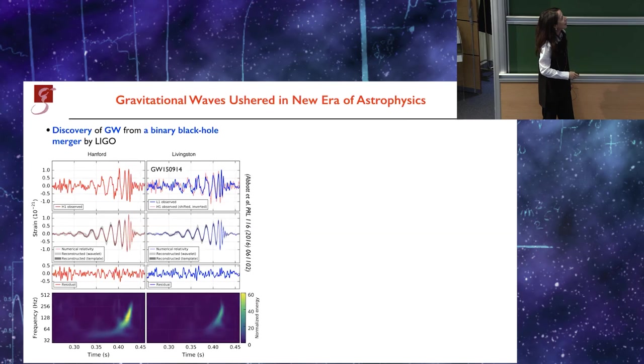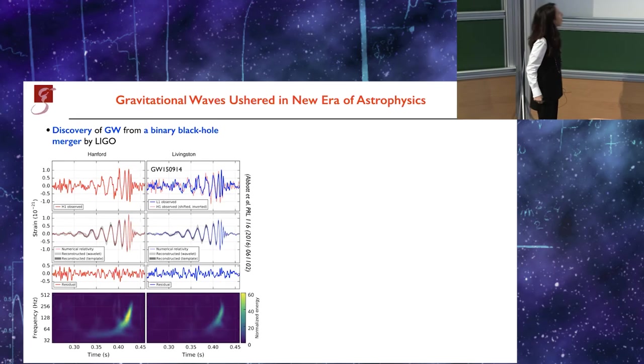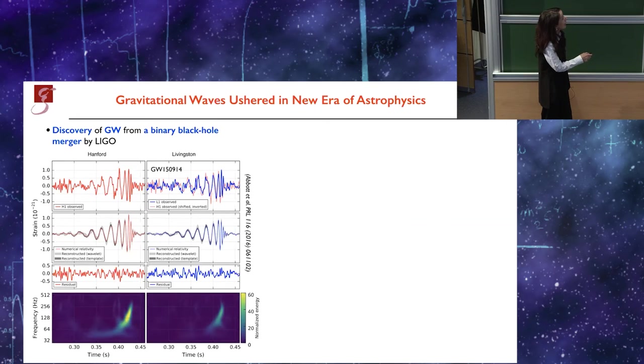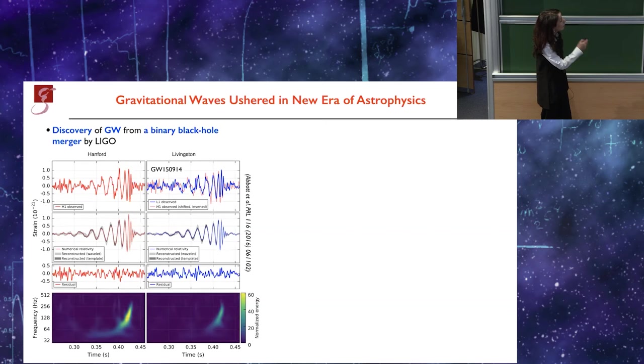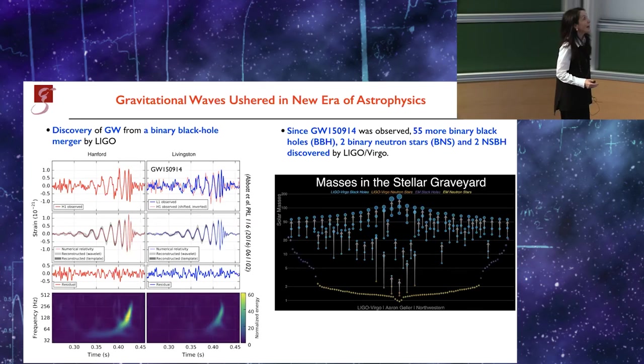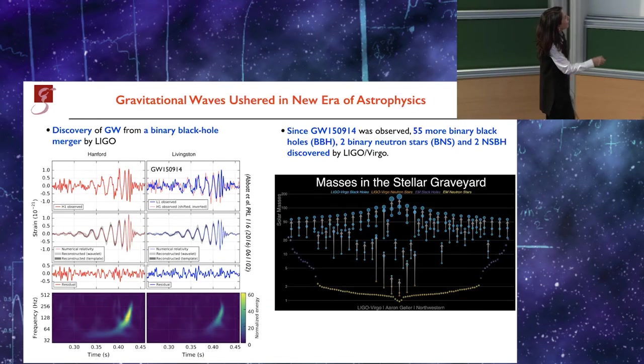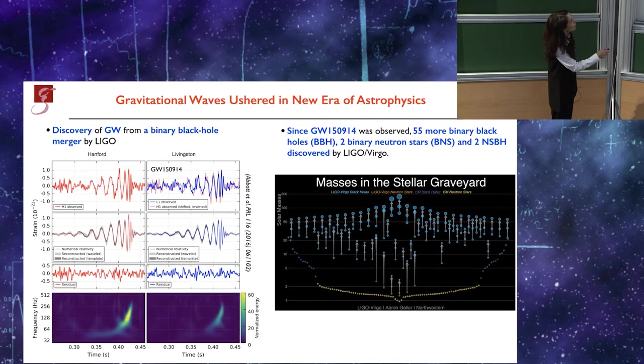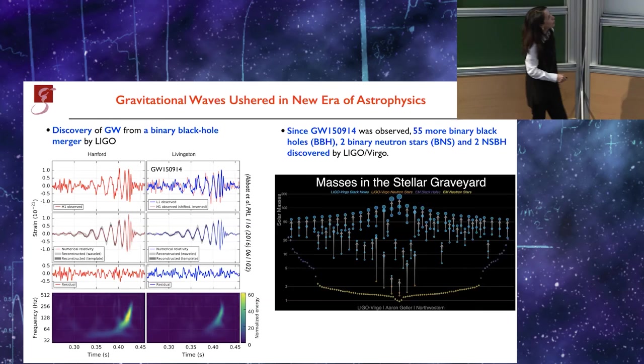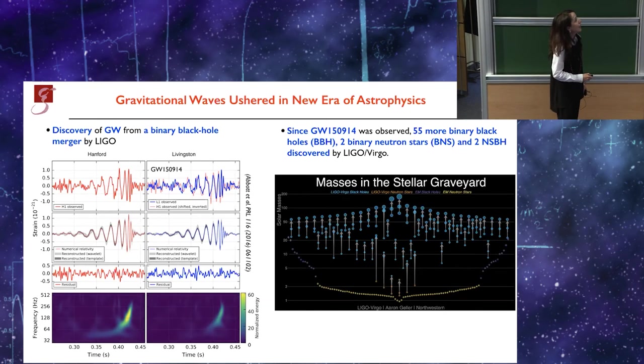Let me start now with the use with LIGO and Virgo. These waveforms were used in a template bank and also for inference studies for the first detection that you see on the left. Since then LIGO and Virgo have discovered 55 binary black holes represented in this plot here. This is the mass in solar masses, including two binary neutron stars and two neutron star black holes. The paper just came out last June.